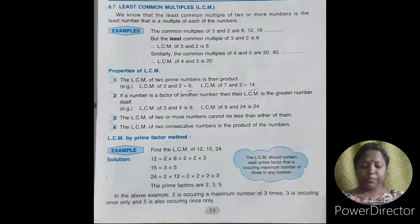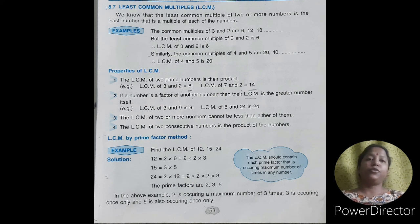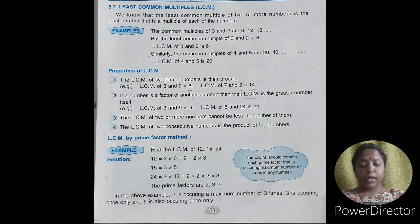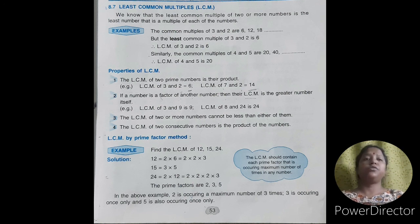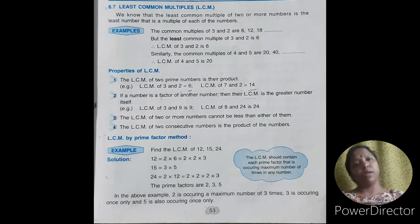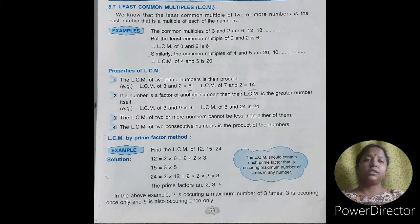Now the properties of LCM. The first property: the LCM of 2 prime numbers is their product. If we have to calculate the LCM of 2 prime numbers, we find the product of those prime numbers. Example: LCM of 3 and 2 — both are prime numbers, so their LCM is 3 × 2 = 6. Another example: LCM of 7 and 2 — both are prime numbers, so LCM is 7 × 2 = 14.